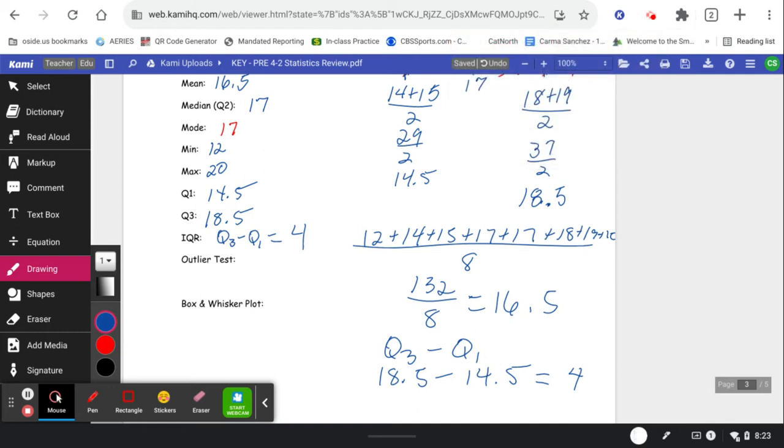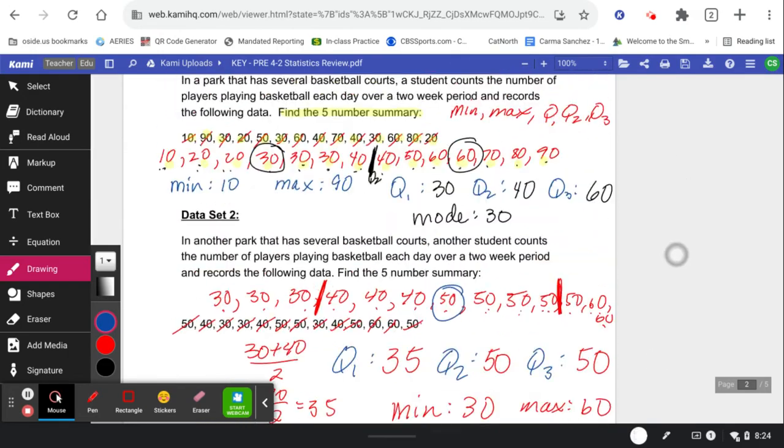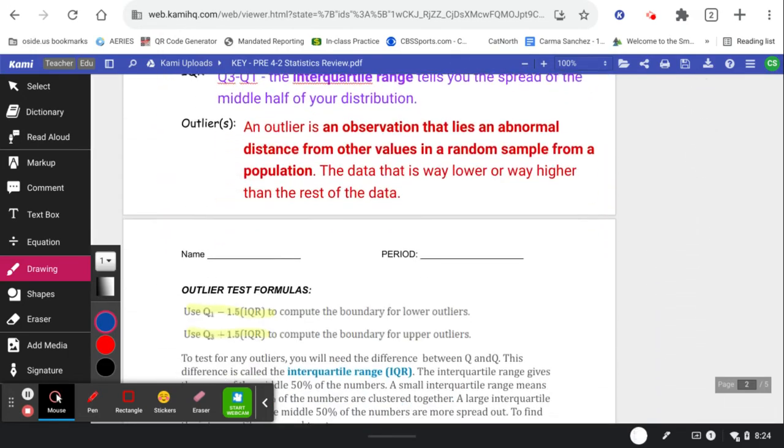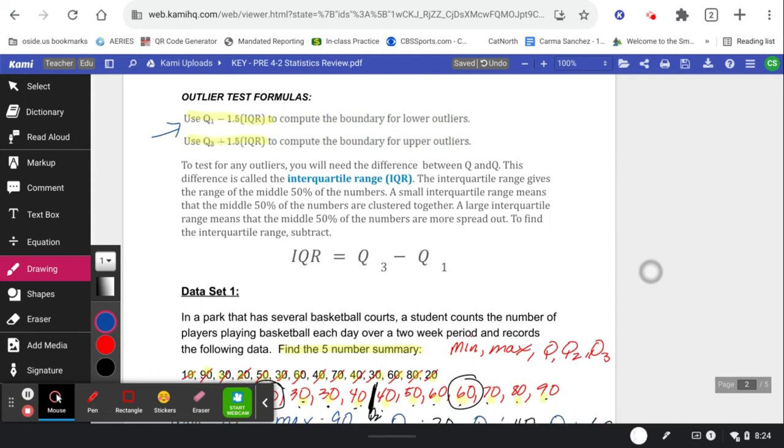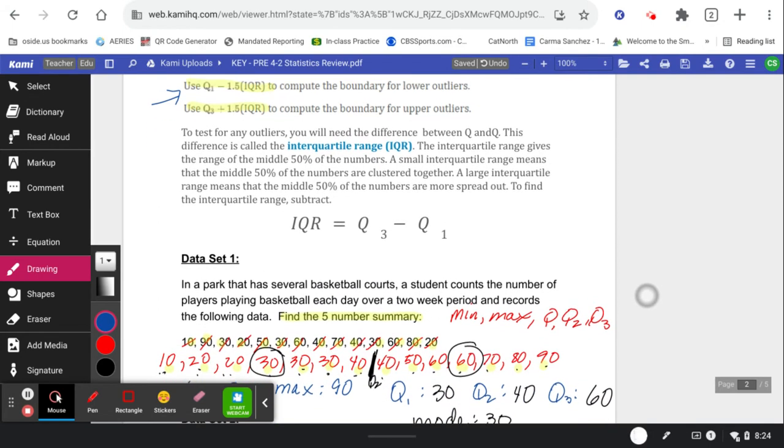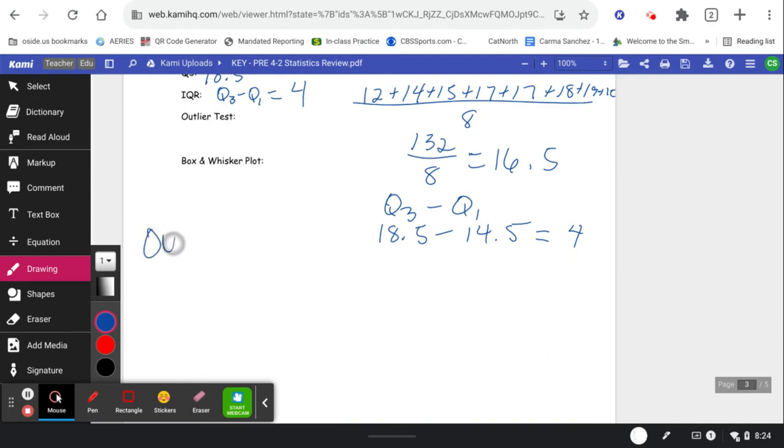Now for the outlier test of this one, there's some formulas up at the top that we need right here. So lower outlier is Q1 minus 1.5 of the IQR, and then the upper outlier is Q3 plus one and a half times the IQR. So let's go write these down for outlier test. Q1 minus one and a half times the IQR, and Q3 plus one and a half times the IQR.